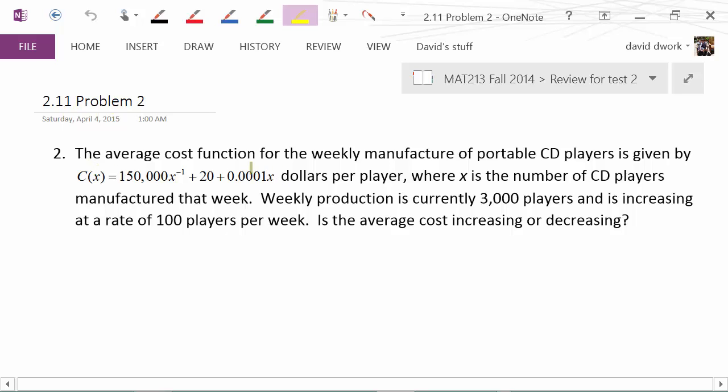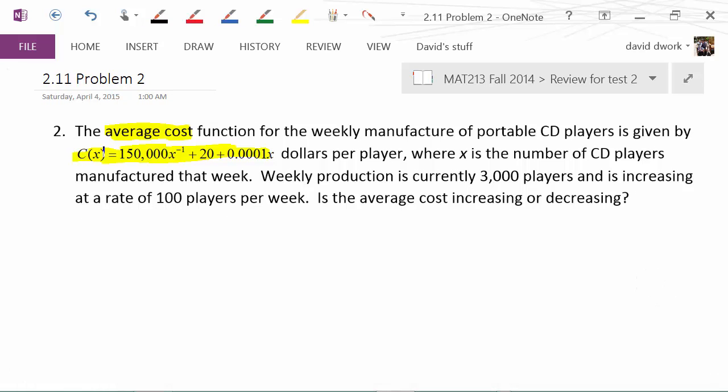The average cost function for weekly manufacturing of portable CD players is given by C(x) = 150,000x^(-1) + 20 + 0.0001x dollars per player, where x is the number of CD players manufactured that week. It's important to note this is the average cost, so it's not necessary to divide by x. Weekly production is currently 3,000 players and is increasing at a rate of 100 players per week. Is the average cost increasing or decreasing?